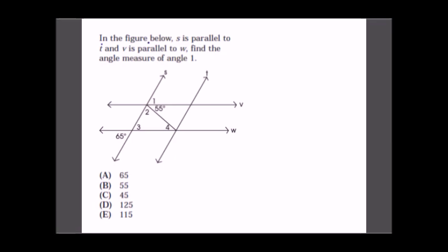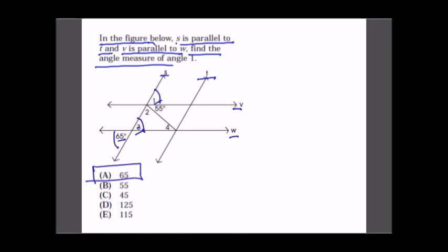In the figure, s is parallel to t and v is parallel to w. Find the measure of angle 1. With two sets of parallel lines crossed by a transversal, corresponding and alternate angles are equal. Since the given angle is 65°, angle 3 = 65° and angle 1 = 65°. The answer is option A.